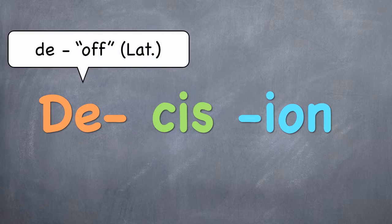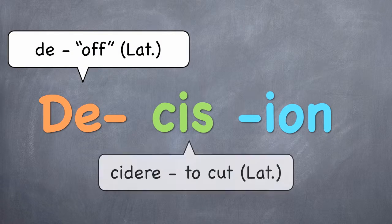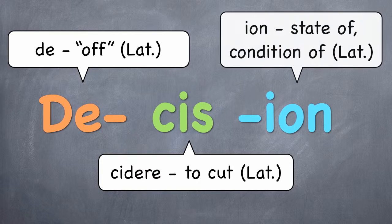Well, as we said, de means off. The root cis is a version of Latin cidere, which means to cut. And the suffix ion means the state of or condition of.